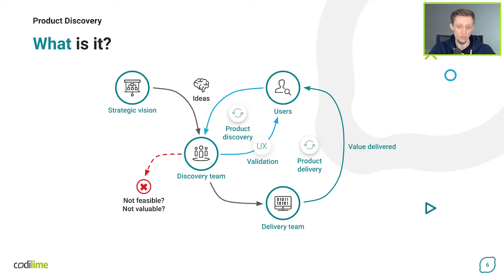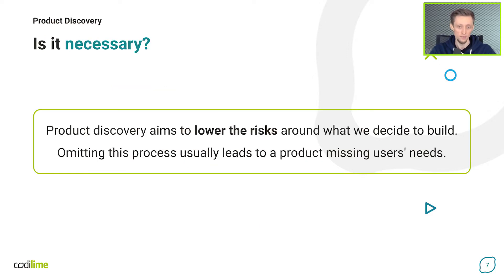Product discovery is often defined in contrast with product delivery. It's the work that you do to make decisions about what to build. On the other hand, product delivery is all about the building, shipping and maintenance of a quality product. There is always uncertainty when making product decisions. Product discovery is more of an outcome-based process rather than an output-based one. We're not focusing on features and enhancements, but on searching for opportunities for the project to be successful. This approach allows us to save money in the long run while pinpointing a money-making solution.